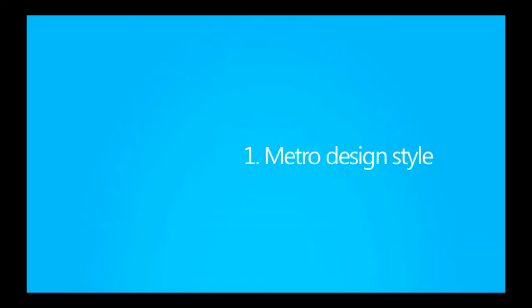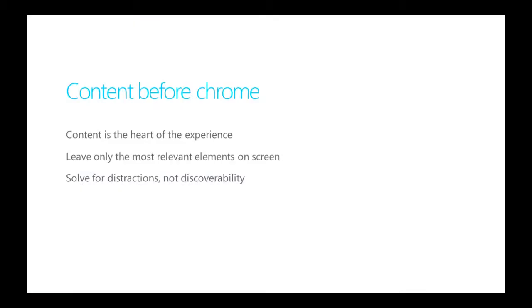The first trait is Metro design style. Key to the Metro design language is the concept of content before Chrome. Whether you're building a shopping, social, media, or any other category of app, content is at the heart of that experience.